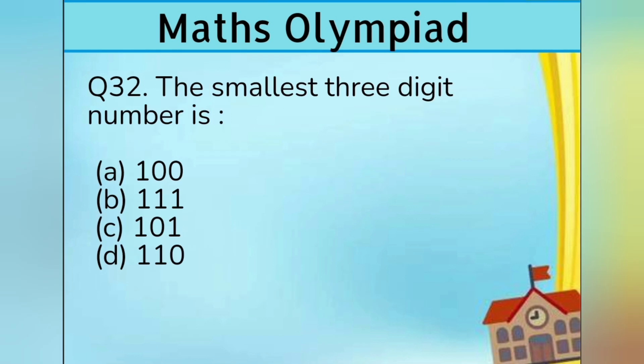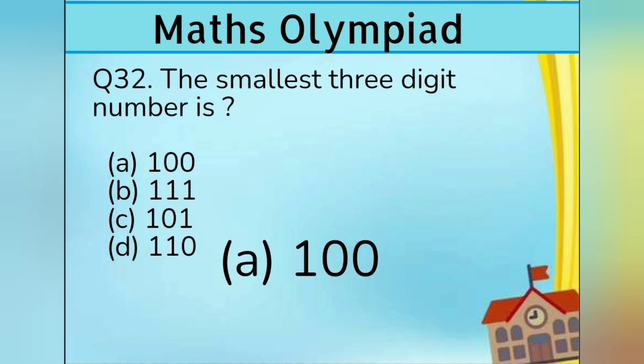Question number 32. The smallest 3-digit number is: Option A 100, Option B 111, Option C 101, and Option D 110. Answer is Option A 100.